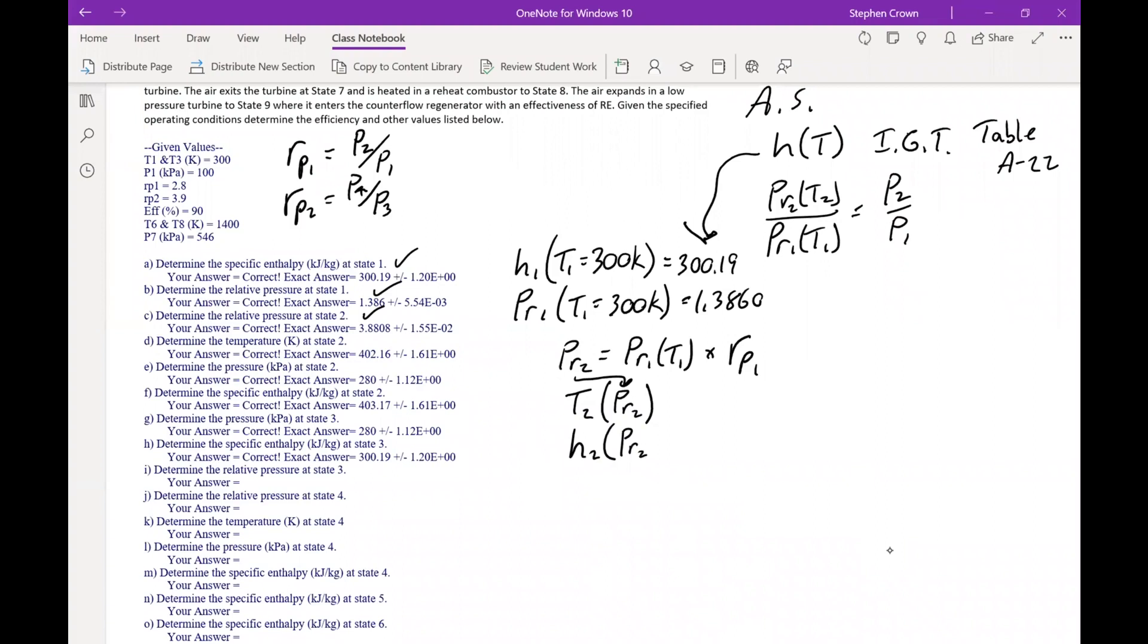So in this case, we go to the ideal gas tables. PR2 is 3.8808, and we look for that in the tables. And it probably won't be exactly in there. There's a 3.806, which is close, and a 3.481. So we'll have to interpolate between those values. Actually 3.806 and 4.153 is what it's moving between. So a little bit higher than 400, less than 410, and we find out when we interpolate, it's 402.16. We'll do the same thing for enthalpy.